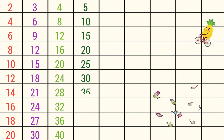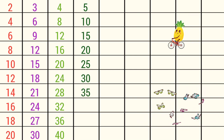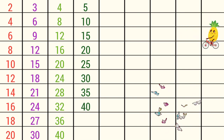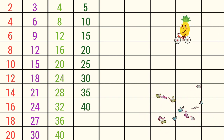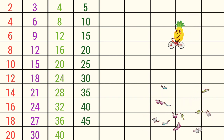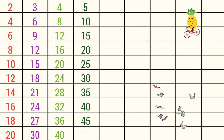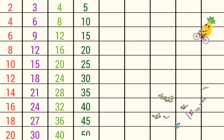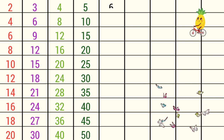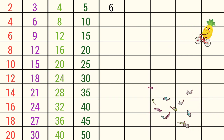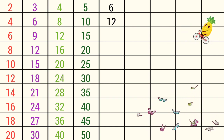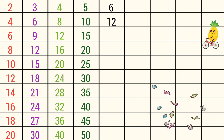5 7s are 35, 5 8s are 40, 5 9s are 45, 5 10s are 50, 6 1s are 6, 6 2s are 12.